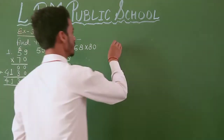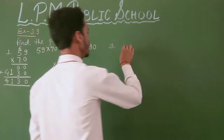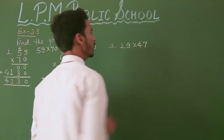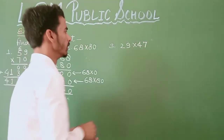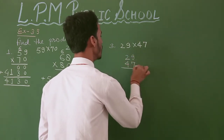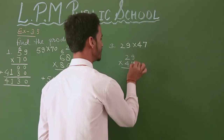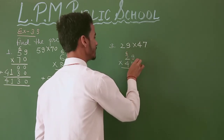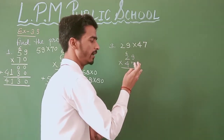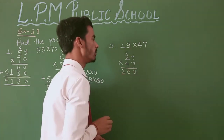The next question is 29 × 47. Firstly write 29 × 47. Multiply the 1s: 7 nines are 63, 6 carry. And 7 twos are 14, plus 6 carry gives 20.